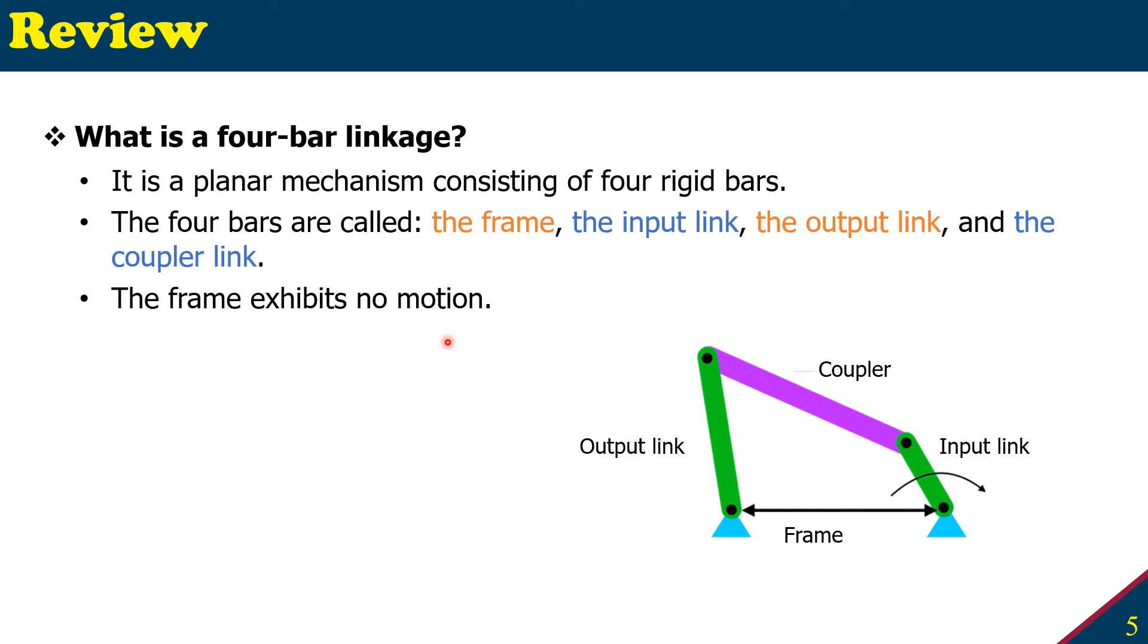The frame exhibits no motion. The thing to notice is we call it four bar linkage, and normally you will see there are three bars. You can assume there is a bar here, but since these two positions are fixed and this bar doesn't move at all, mostly you will not see this frame, this bar. And that's why it is called four bar linkage.